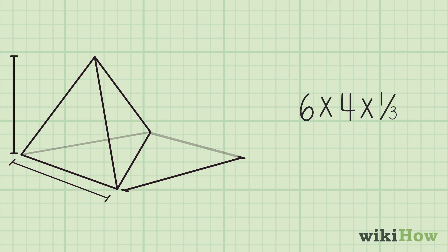In this case, 6 times 4 times 1 divided by 3 equals 8, which means the pyramid has a volume of 8 cubic centimeters.